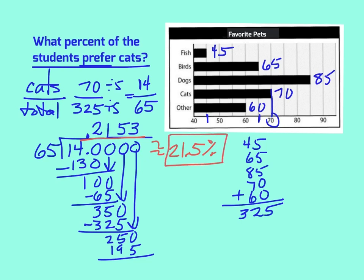You could also set this up with a proportion of 70 over 325 equals X over 100, and use cross products, but you'll end up doing this same division right here, so be sure to reduce first.